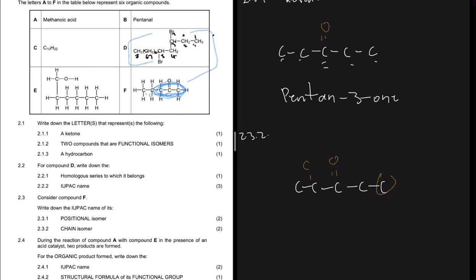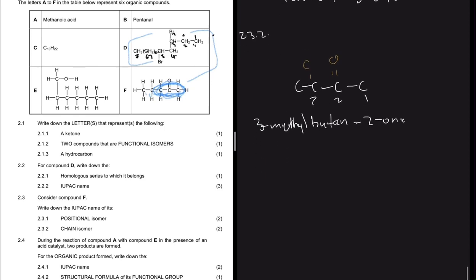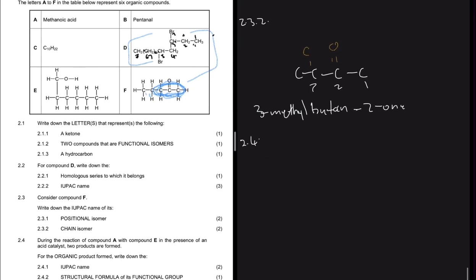If you take a carbon and place it as a branch, you get a different chain and a different name but still the same molecular formula - and that works as a chain isomer. In this instance, if this is carbon one and this is two, then this is three. So we have 3-methylbutan-2-one as the chain isomer for compound F.